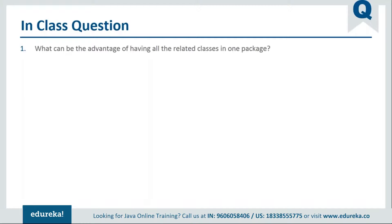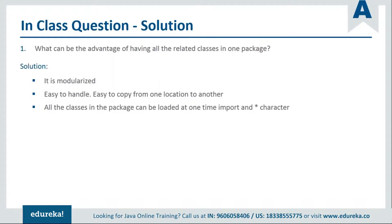I skipped a couple of slides before moving to the editor, so let's quickly look at those. The question is: what is the advantage of having all related classes in one package? It organizes classes into one group or module, making access easier. You can access all classes with one keyword. It gives a modularized approach — easy to copy classes from one location to another, and accessing methods also becomes easier. This connects to access modifiers, which we will cover next.